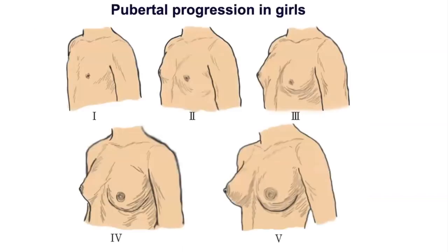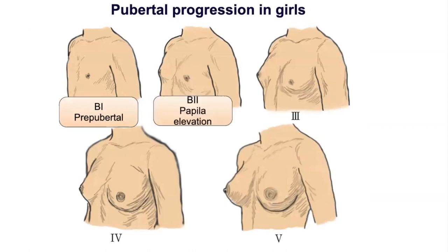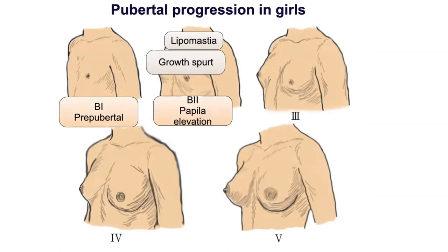Puberty in boys and girls progresses systematically through various stages. In girls, breast stage 2 must be differentiated from lipomastia, particularly in obese girls. Breast development may be asymmetrical in the initial stages, which may cause parental concern.